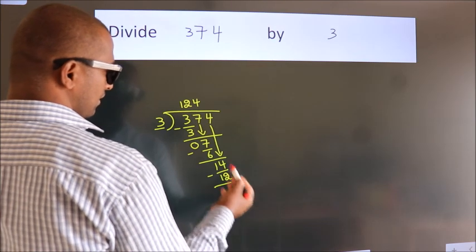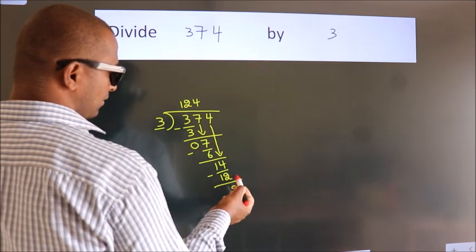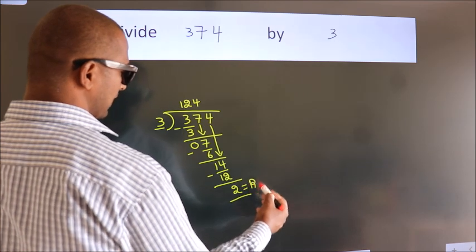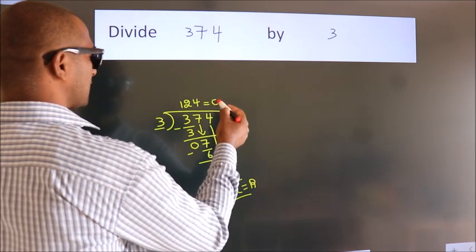After this, no more numbers to bring it down. So, we stop here. This is our remainder. This is our quotient.